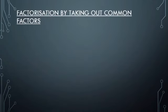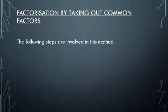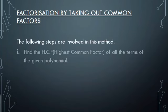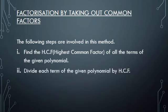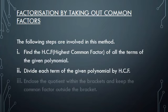There are various processes to do factorization. The first method is factorization by taking out common factors. The following steps are involved in this method: Find the HCF, or highest common factor, of all the terms of the given polynomial. Divide each term of the given polynomial by the HCF. Enclose the quotient within brackets and keep the common factor outside the brackets.